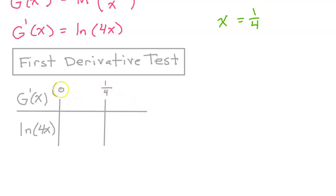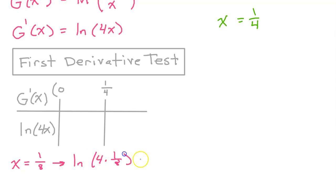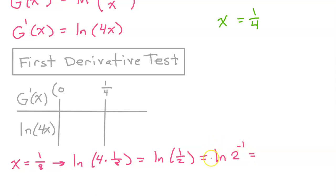I'm starting my sign chart at zero because the natural log is not defined for values of x that are zero or less. We need to pick a value between zero and one-fourth as our first test value — let's use x equals one-eighth. That gives us the natural log of 4 times one-eighth, which equals the natural log of one-half. That's the same as the natural log of 2 to the negative one power. Using the logarithm property in reverse, we move the negative exponent to the front, giving us negative natural log of 2, which is definitely less than zero.